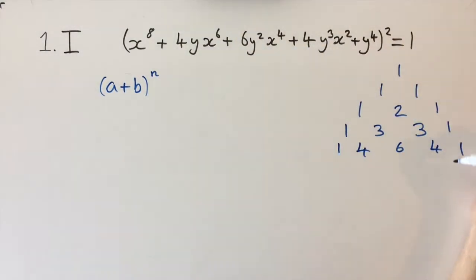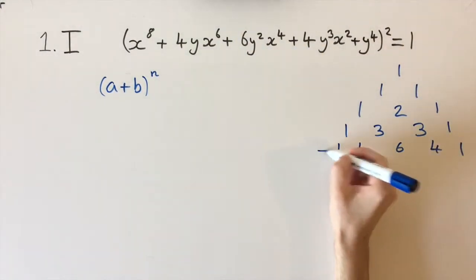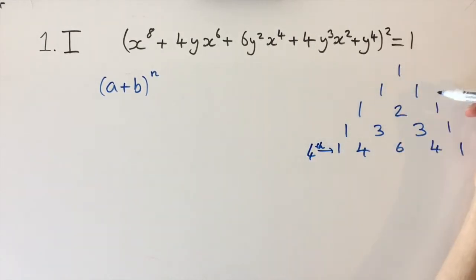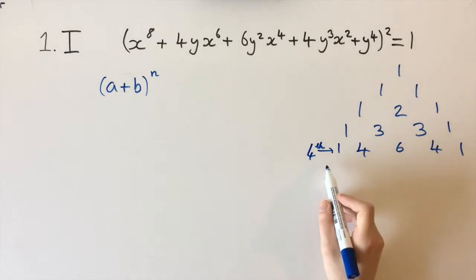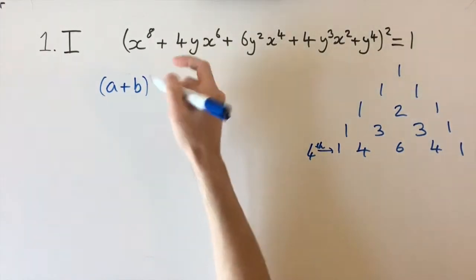This tells us we have the 4th row of Pascal's triangle, if we call this row 0, then 1, 2, 3, 4. Then we're looking at an expansion of the 4th power.